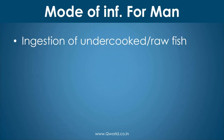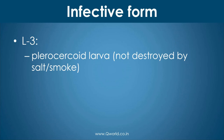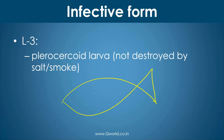The mode of infection for human beings is the ingestion of fish — but importantly, uncooked or raw fish. In India, that is why it is less common, because of the habit of eating cooked fish. The infective form is obviously the plerocercoid larva which is present in fish. Interestingly, it does not get destroyed by salt or smoke, so if you are eating smoked fish or salted fish, you are still susceptible to this infection.